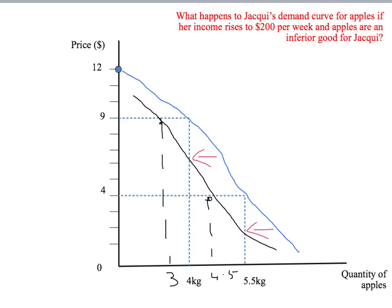So that's it. We've now seen what happens when we change the price of other goods or income for Jackie. Next, we're going to start bringing other people in to look at the market demand curve.